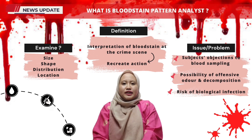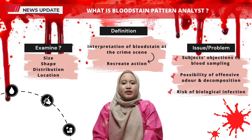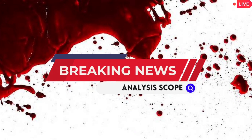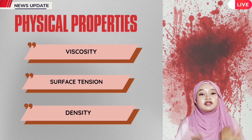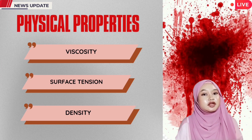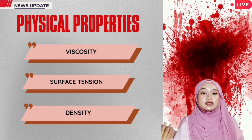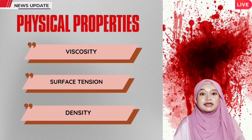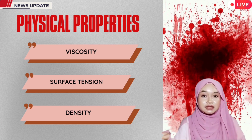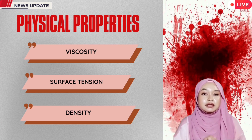Human blood problems include subject objection to blood sampling, the possibility of offensive odor and decomposition, and the risk of biological infection. In order to develop a forensic blood substitute that is more similar to human blood and more practical than the previous product, it is important to analyze a few criteria: its physical properties, three bloodstain pattern properties, and impact angle.